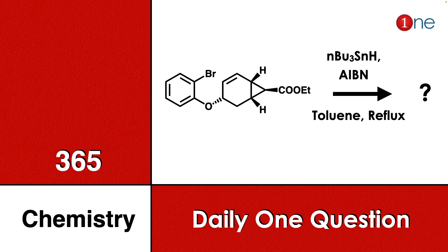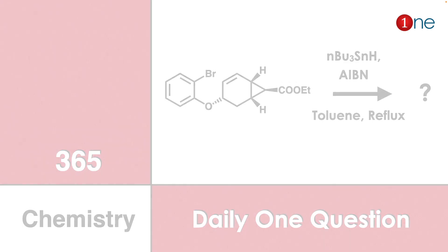Here you have benzene attached with bromine and an oxygen side chain which contains a cyclohexene. You also have a strain-full cyclopropane with an ester. The reagents are tributyltin hydride with AIBN. The second step replaces it with Diazomethane. Among these, you have to guess what will be the final product.